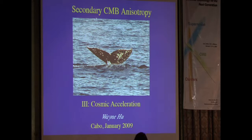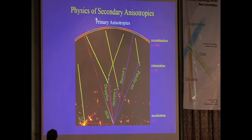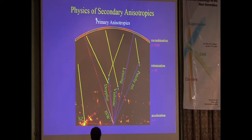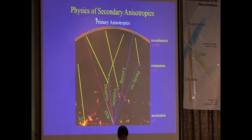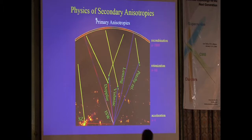Marching down in redshift: we went through reionization first, then intermediate redshifts with gravitational lensing. The important things there were the generation of B-modes from reionization as an opportunity to measure gravitational waves, distortion of the E-mode from the last scattering surface at recombination giving B-modes from lensing, allowing reconstruction of the mass distribution between us and redshift one thousand. Now we're marching toward the acceleration epoch.